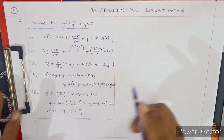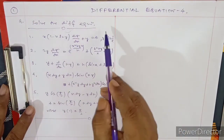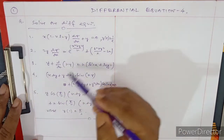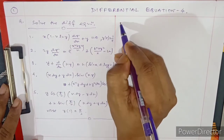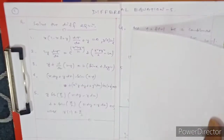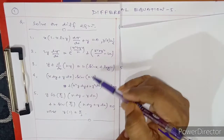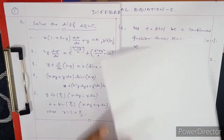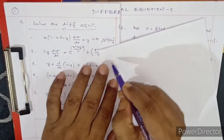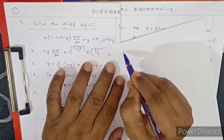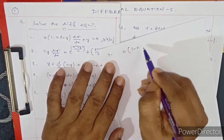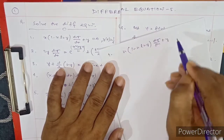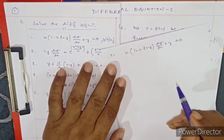In this video we will discuss five differential equation problems. The very first question: solve the differential equation x(1 − x ln y) dy/dx + y = 0.